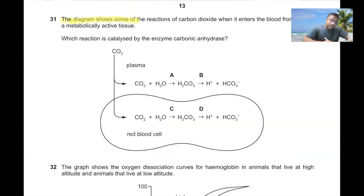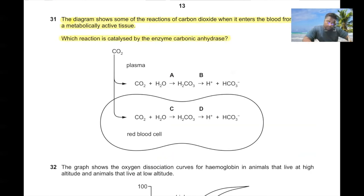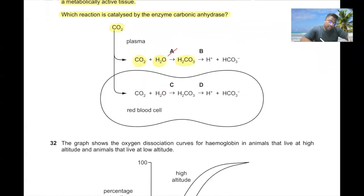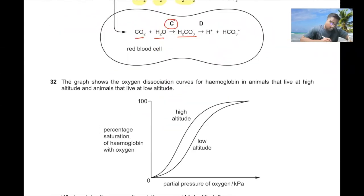Question number thirty-one. The diagram shows reactions of carbon dioxide when it enters the blood from metabolically active tissue. Which reaction is catalyzed by carbonic anhydrase? The reaction of CO₂ with water to produce hydrogen carbonate does not occur outside red blood cells, so A and B are wrong. Carbonic anhydrase converts carbon dioxide and water into hydrogen carbonate inside red blood cells. C is the correct answer.